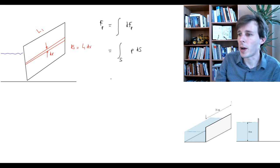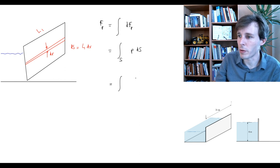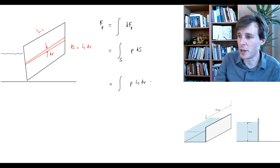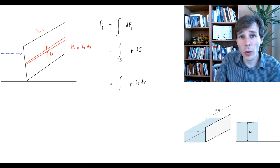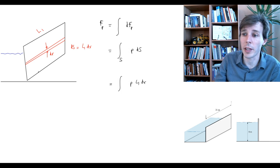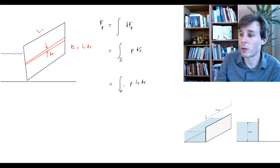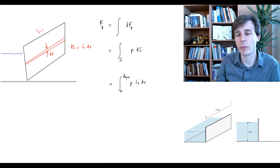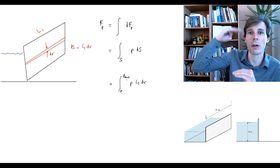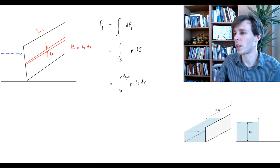We integrate from r = 0 to r = r_max, which in this case is 8 meters — the full height of the panel submerged in water. This gives us the complete force integral over the panel surface.